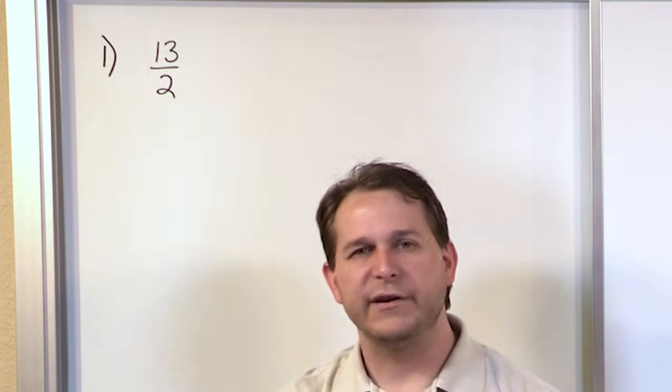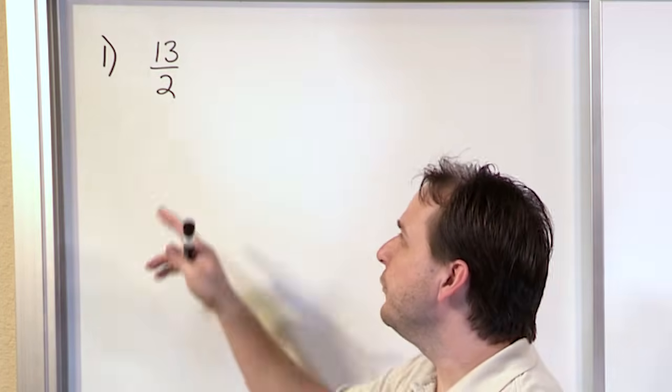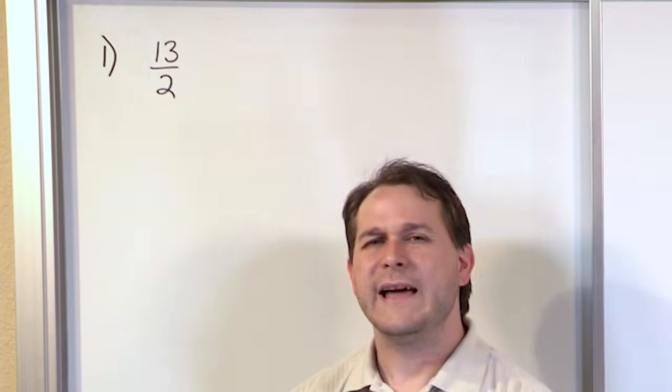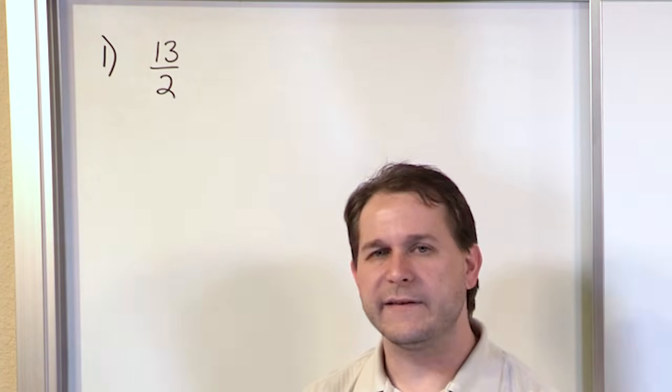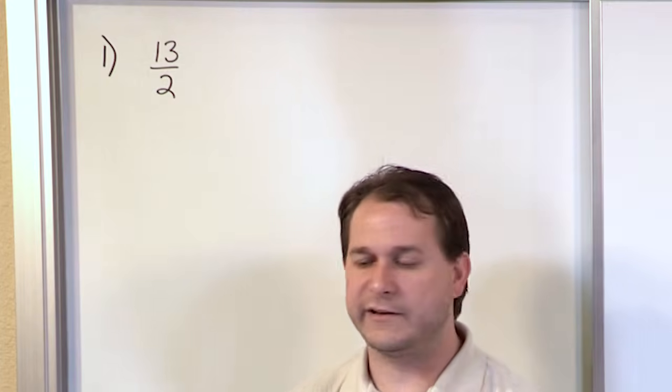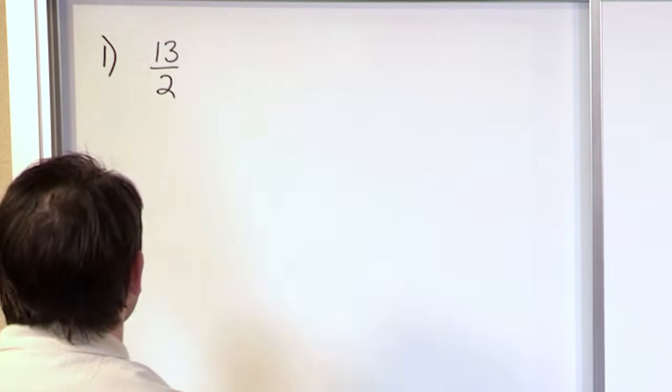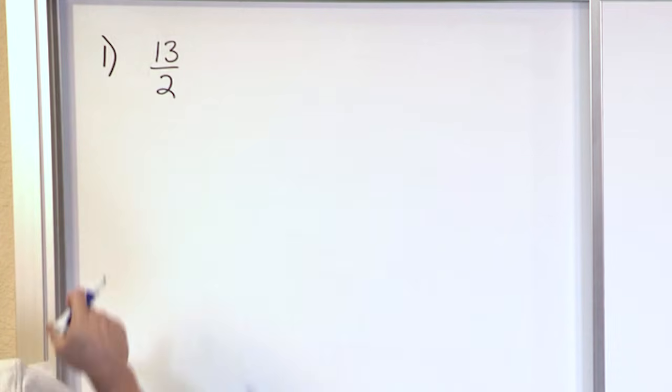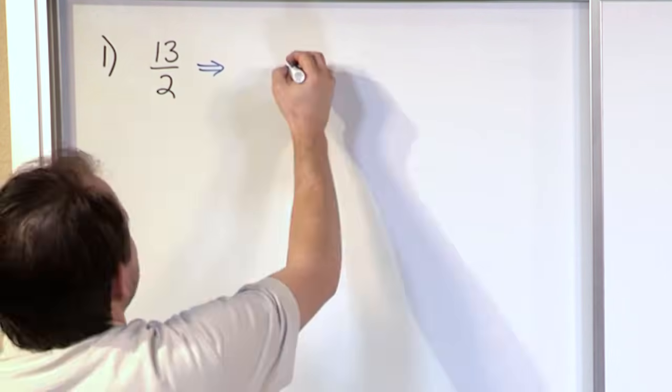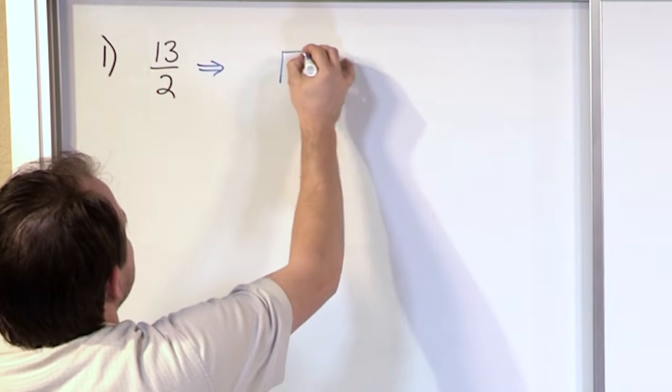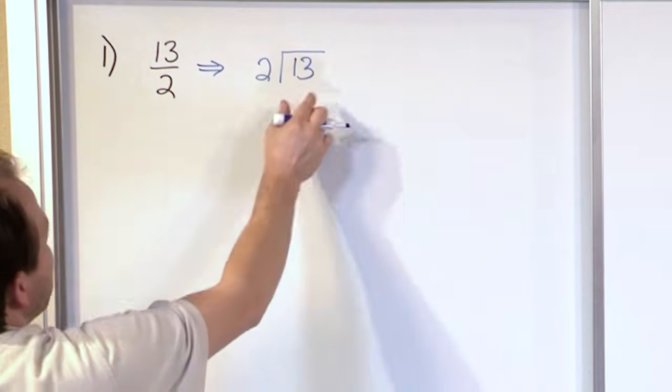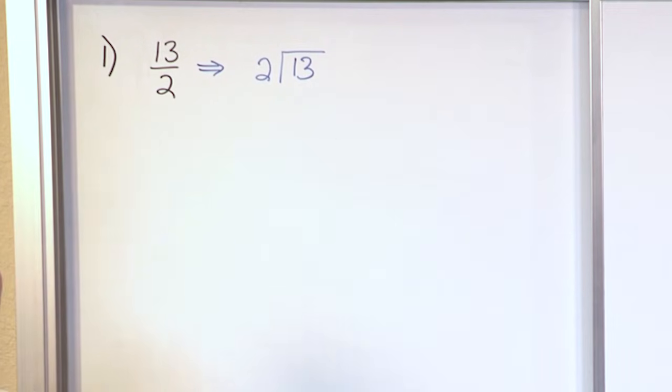Usually you have that division symbol you've learned in math before. Well, when you start seeing fractions, 13 divided by 2 is the same thing as 13 halves. The reason I bring that up is because you want to convert to this mixed number. So you take 13 and divide it by 2. That's what this fraction really means.